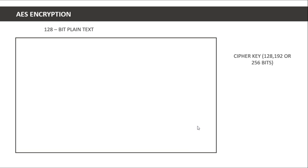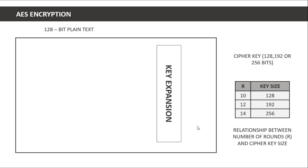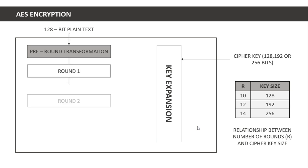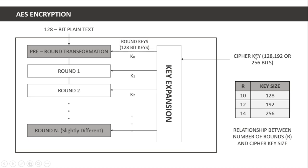AES encryption takes 128-bit plaintext and a cipher key of 128, 192, or 256 bits. Every key size has a different number of rounds. We have a key expansion box where we provide the single key, called key zero, and perform a pre-round transformation on the plaintext using key zero. For a 128-bit key size we have 11 rounds total, counting the pre-round as the zeroth round.